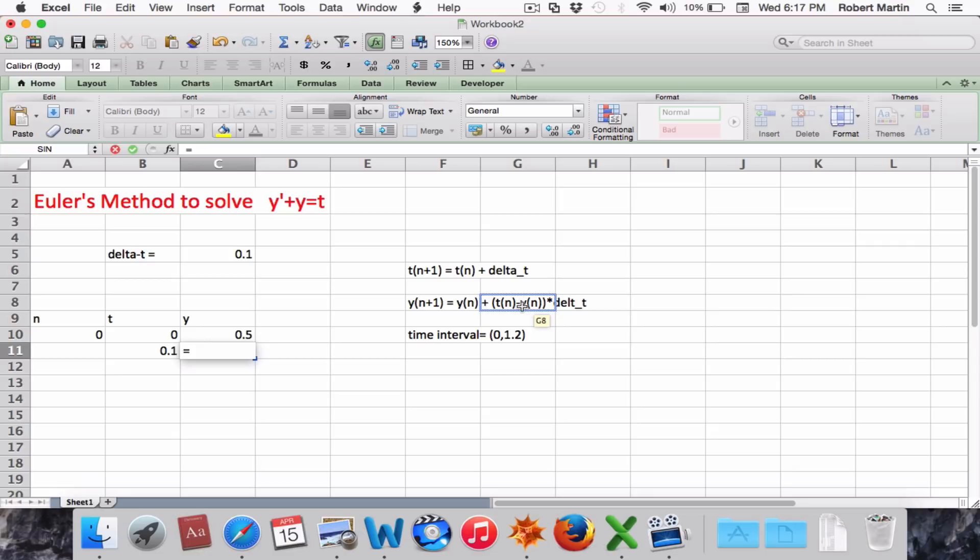which is the previous value of t minus the previous value of y, close parentheses, times our delta t value. And again, insert those dollar signs before your delta t value.